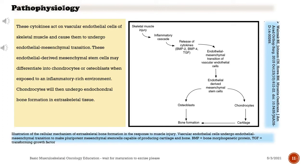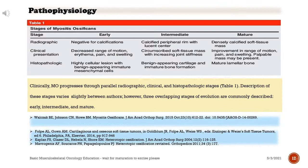Illustration of the cellular mechanism: vascular endothelial cells undergo endothelial mesenchymal transition to make pluripotent mesenchymal stem cells capable of producing cartilage and bone. BMP equals bone morphogenetic protein; TGF equals transforming growth factor.